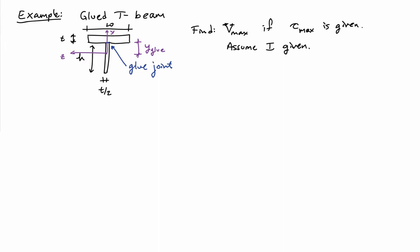The distance between the centroid of the cross-section and the glue joint will be defined as y-glue, so we'll take that as given. We'll also assume that the moment of inertia of the cross-section is given as I.